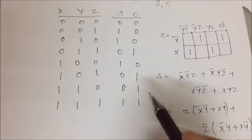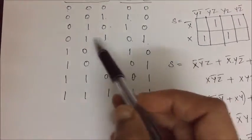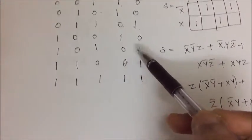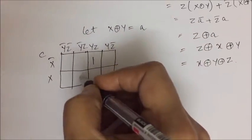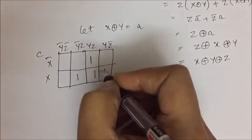So if you see the truth table, we have c is 1 for 3, 5, 6, 7. So 3 is this, 5, 6, 7.